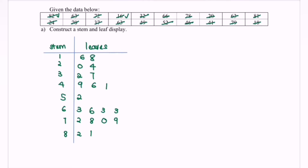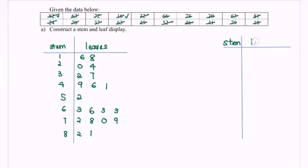Remember, arrange all the scores in a vertical manner from the smallest scores to the bigger scores. For each stem, the leaves are arranged in ascending order from the left to the right. Now we rearrange the stem and the leaf.